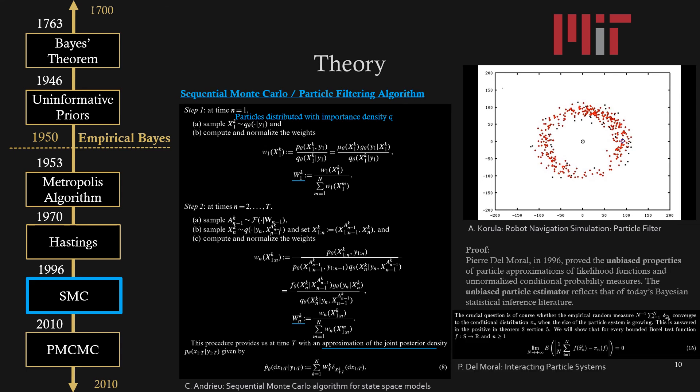For the proof, Pierre del Moral in 1996 proved that the particle filter or SMC methods are unbiased for particle approximation. This unbiased particle estimator is reflective of a lot of today's Bayesian statistical inference literature, and as you can see below is part of that proof.